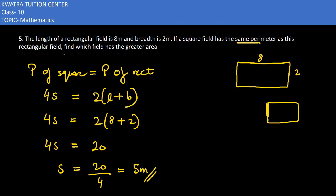Now we have 5 meter. We can easily find the area of the square and we can easily find the area of the rectangle. So area of square would be 4 into S. 4 into 5 that means 20 meter square.